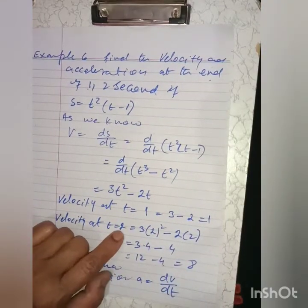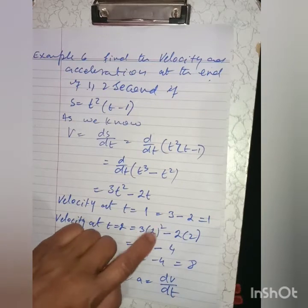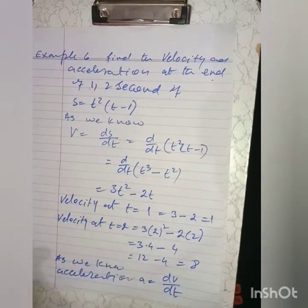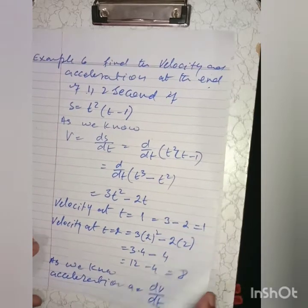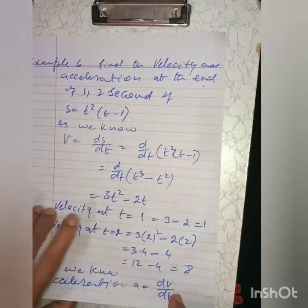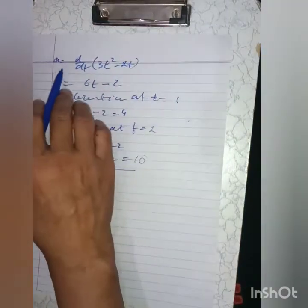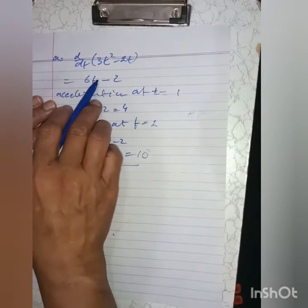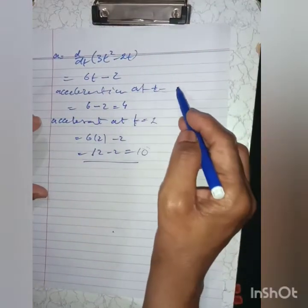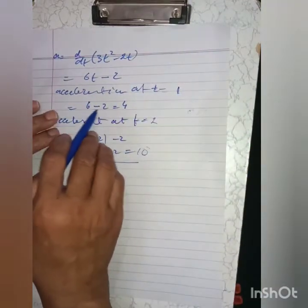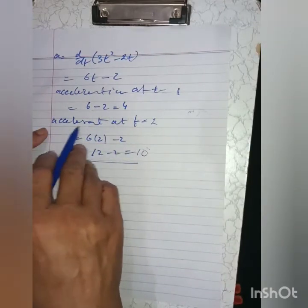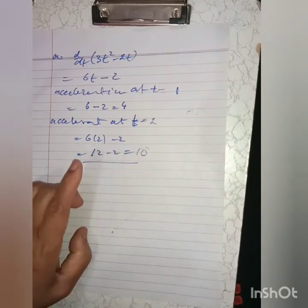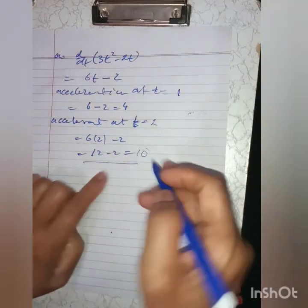Velocity at t = 2: v = 3(2)² - 2(2) = 12 - 4 = 8. Since acceleration is the derivative of velocity, a = dv/dt = d/dt(3t² - 2t) = 6t - 2. Acceleration at t = 1: a = 6(1) - 2 = 4. Acceleration at t = 2: a = 6(2) - 2 = 12 - 2 = 10.